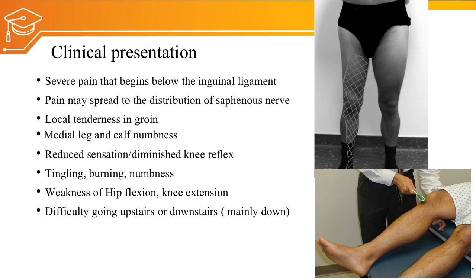Difficulty going upstairs and downstairs are common disabilities. Buckling of the knee is another clinical feature, caused by weakness of the knee extensors — the quadriceps muscle. The patient complains of a feeling of giving way of the knee, especially walking downstairs, where the knee cannot hold the position of extension.